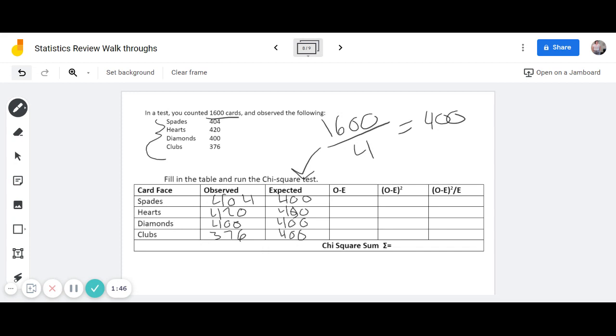you take your observed minus expected, so 404 minus 400 is 4. 420 minus 400 is 20. 400 minus 400 is 0. And then 376 minus 400 is negative 20. Oh, my bad.